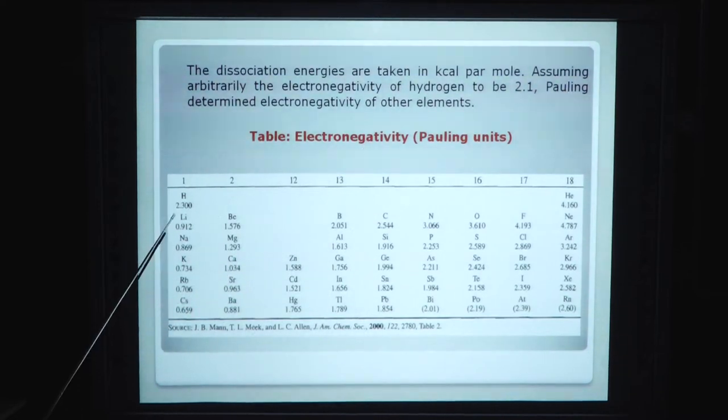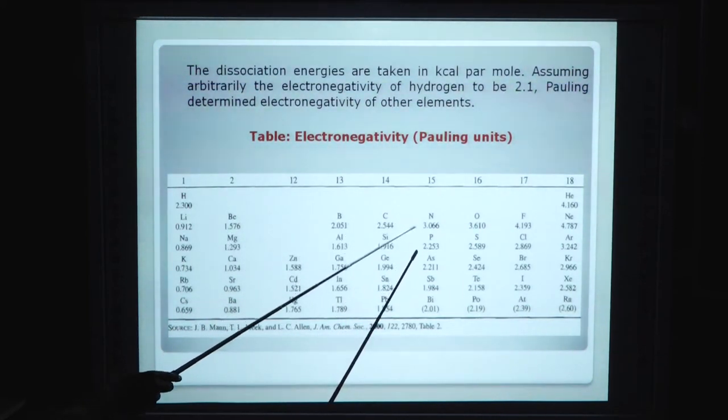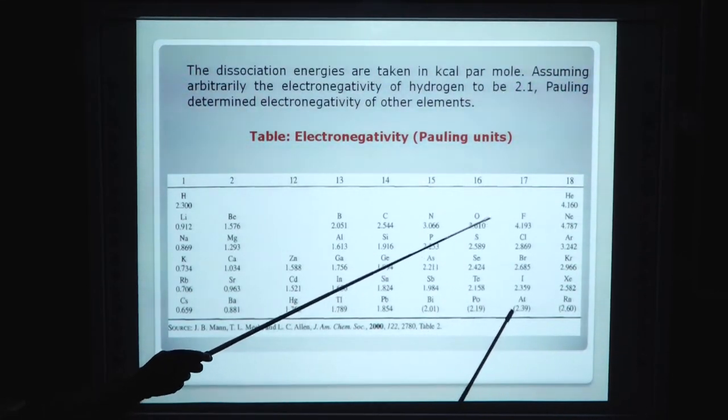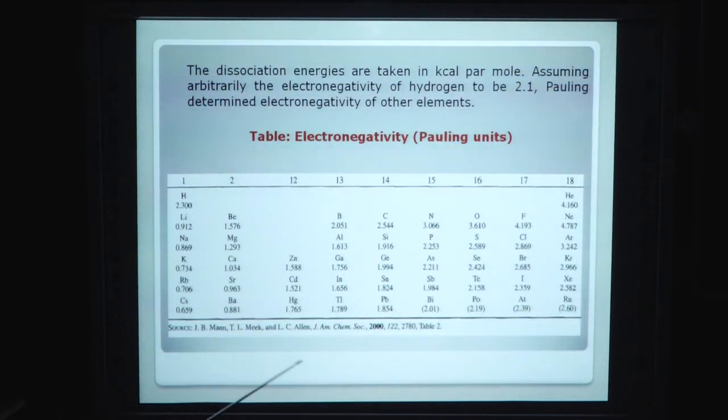Hydrogen electronegativity is 2.1 in this table. You see electronegativity for hydrogen is 2.3, helium is 4.1, lithium is 0.9, beryllium is 1.5, boron is 2, carbon is 2.5, nitrogen is 3, oxygen is 3.6, fluoride is 4.1, and neon is 4.7. This table is taken from Jack's 2000.